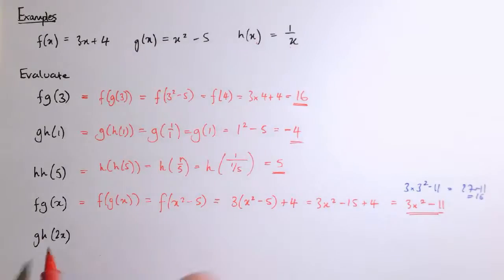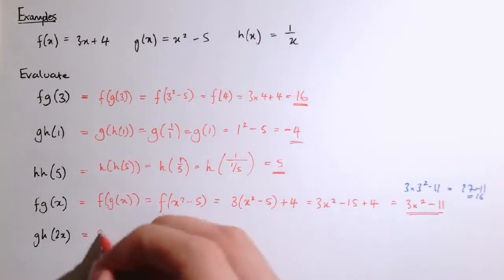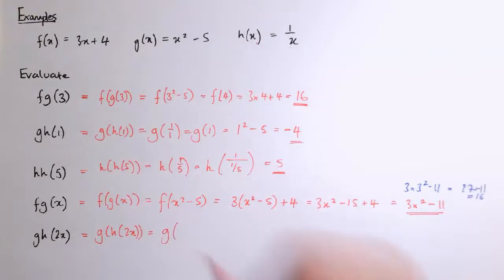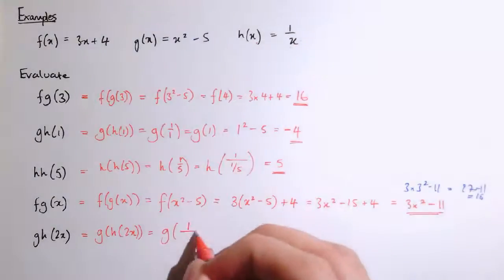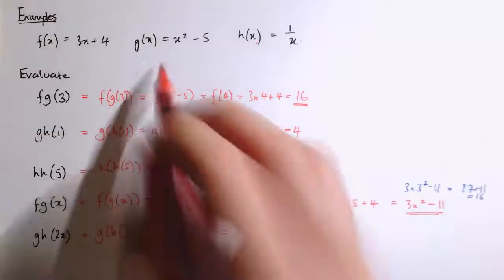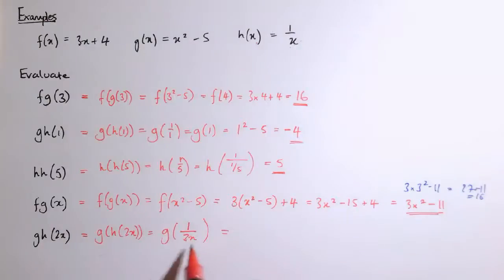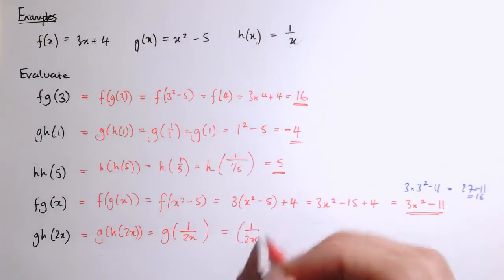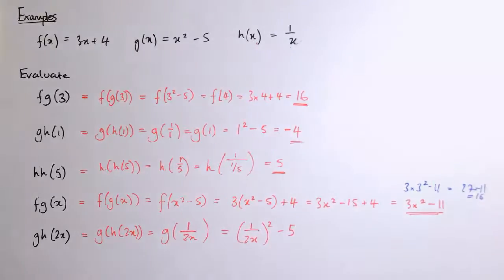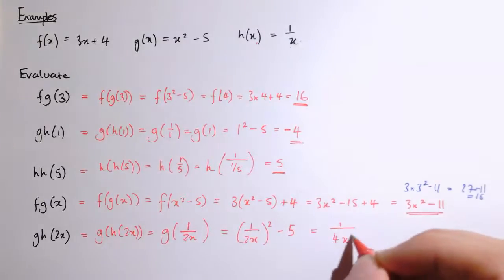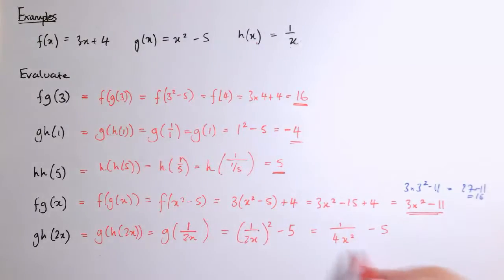What if I said what's g of h of 2x? Well, that would be g of h of 2x, like that. h of 2x, if I put 2x into this function, I'm going to get 1 over 2x, and then if I apply g to 1 over 2x, I'm going to have to replace this x with 1 over 2x, because that's what I'm putting in the function now, so I get 1 over 2x all squared minus 5. If you wanted to, you could rewrite that as 1 over 4x squared minus 5. That's a rule that we could use to work out g of h of 2x, if we wanted to do that.